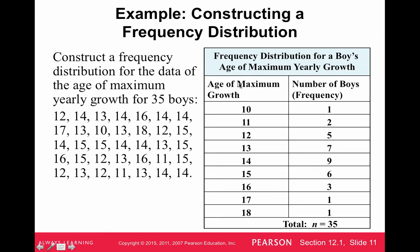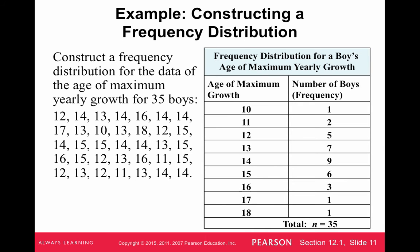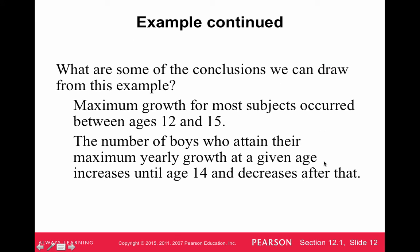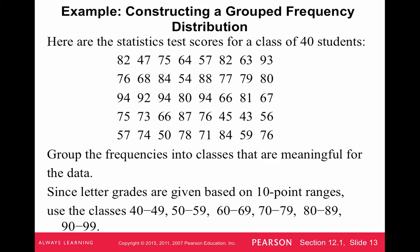Once the data is organized, we can draw conclusions. For instance: maximum growth for most subjects occurred between ages 12 and 15, since the frequencies are highest there. The number of boys who attained their maximum yearly growth increases until age 14 and decreases after that. You can also see that 14 is the most common age for maximum growth.